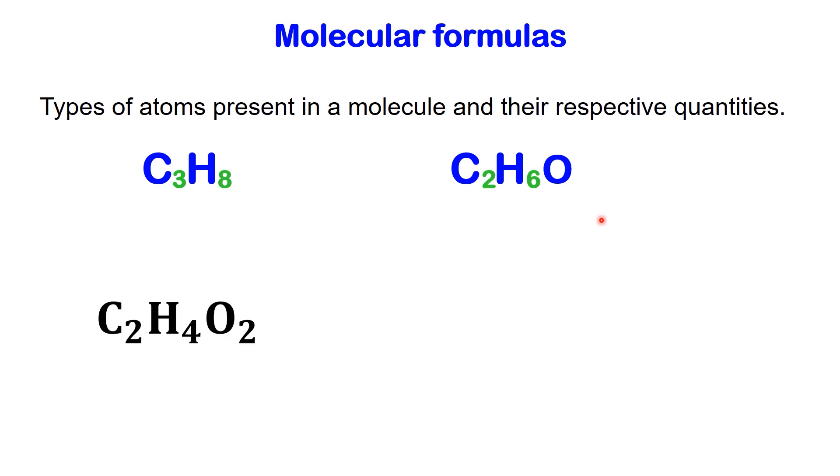Now, let's consider acetic acid's molecular formula, which is C2H4O2, indicating that it consists of two carbon atoms, four hydrogen atoms, and two oxygen atoms.